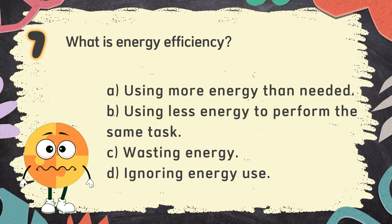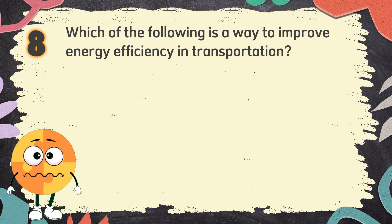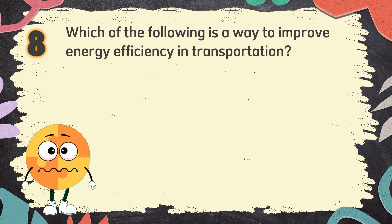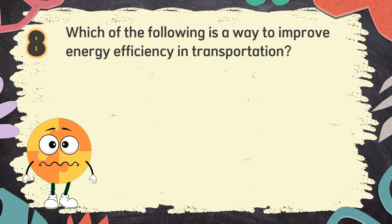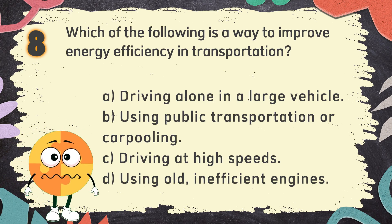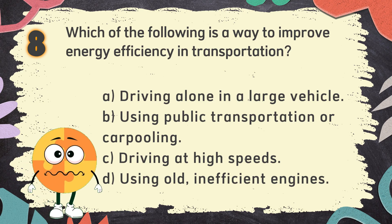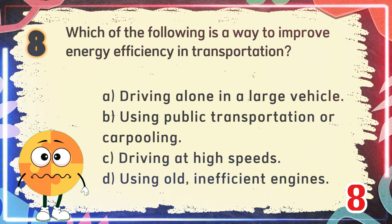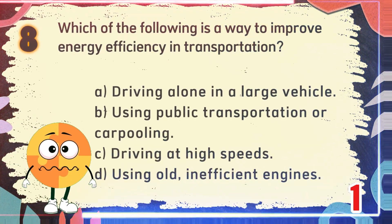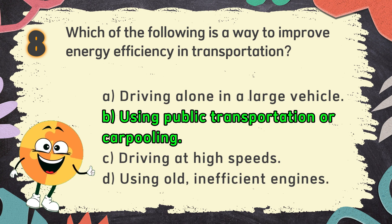Number 8: Which of the following is a way to improve energy efficiency in transportation? The choices are: A. Driving alone in a large vehicle, B. Using public transportation or carpooling, C. Driving at high speeds, D. Using old, inefficient engines. The correct answer is B. Using public transportation or carpooling.